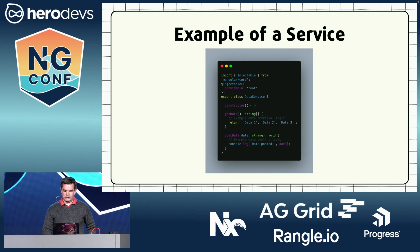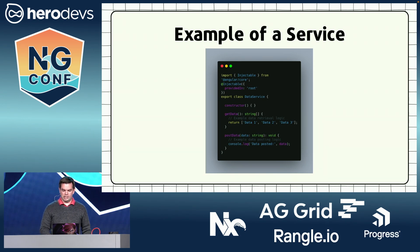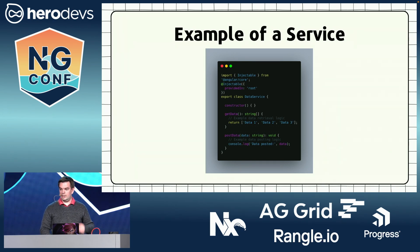Here's an example of a service. We have a data service that gets data from an API or something — data 1, data 2, data 3 — and allows us to post or manipulate that data.